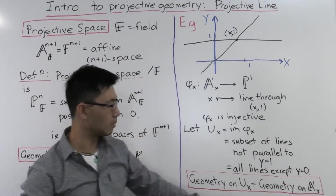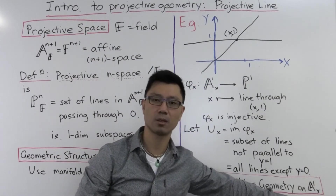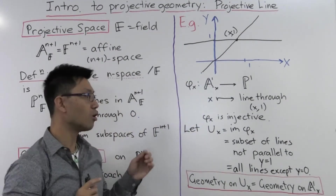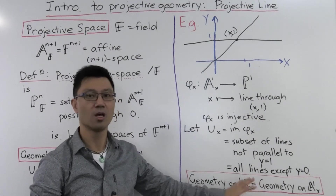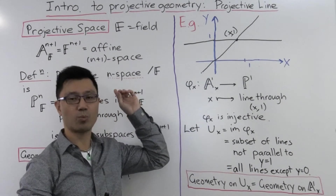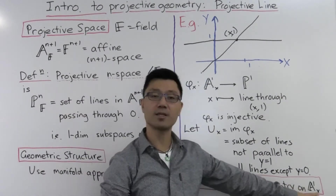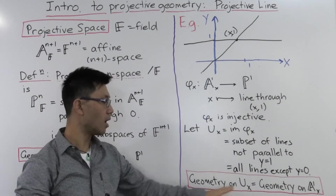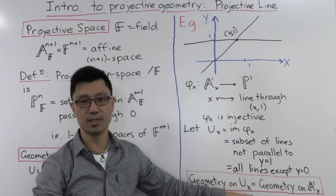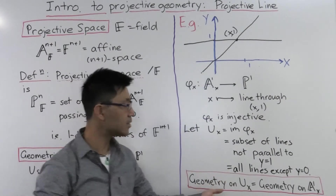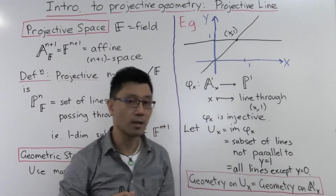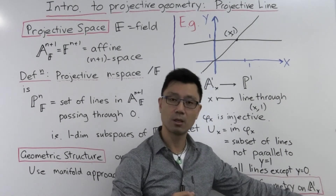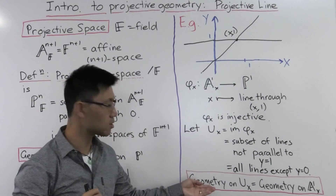In other words, the geometry on this subset U_x is just going to equal the geometry on A^1_x, the affine line. What does that mean? Well, it depends firstly on the field, and secondly on how you want to look at this projective line. For example, if F is algebraically closed, then this affine line is an algebraic variety, so we can think of it as a variety. If the field F is the real numbers, then A^1_x is just the real number line, which is a real manifold.